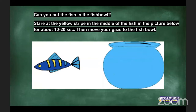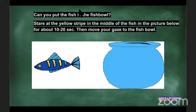Stay at the little yellow stripe in the middle of the fish for about 20 seconds, then move your gaze to the fishbowl and tell me what you observed. Kyle sees the outline of a fish or a yellow fish — some people have already started seeing things.